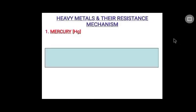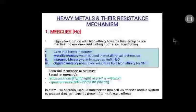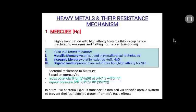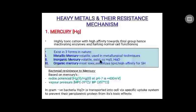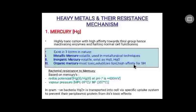Now we will discuss a few heavy metals and their resistance mechanisms. First is mercury, which is one of the highly toxic heavy metal cations, especially towards the nervous system of a fetus or young child. It has a high affinity towards the thiol group of enzymes, resulting in their inactivation and halting normal cell functioning. It exists majorly in three forms: metallic mercury, which is volatile and used in metallurgical techniques; inorganic mercury, also volatile, existing as mercuric oxide and mercuric sulfide; and organic mercury, the most toxic form, which can solubilize lipids and has high affinity towards the thiol group.